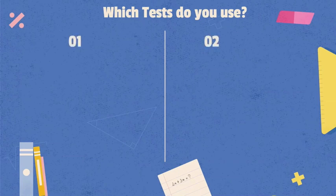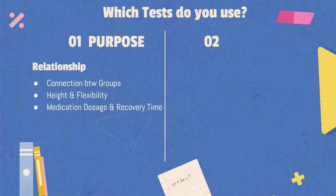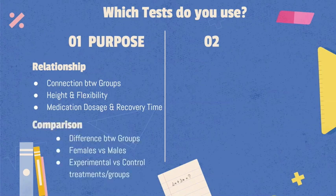First, what is the purpose of our experiment? Is it to find a relationship or connection between different groups, like looking for an equation that relates height and flexibility, or trying to see if a certain medication dosage is linked to recovery time? Or is it for comparison? That is, trying to understand whether there is a difference between different groups, such as females versus males, or control versus treatment groups.